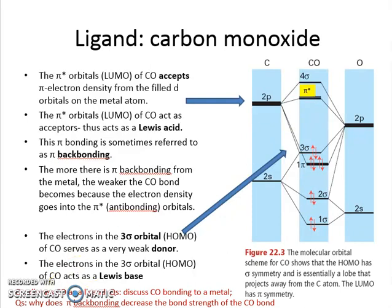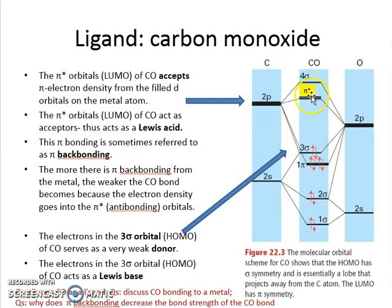Since we consider the ligand as a Lewis base, it donates electron density from the HOMO — the highest occupied molecular orbital — to an empty metal d orbital. However, carbon monoxide is rather special. We also have this LUMO which is unoccupied, meaning carbon monoxide can also accept electron density from the metal. So it works in two ways: CO donates electron density from its 3sigma orbital and also accepts electron density from the metal into its pi star orbital.